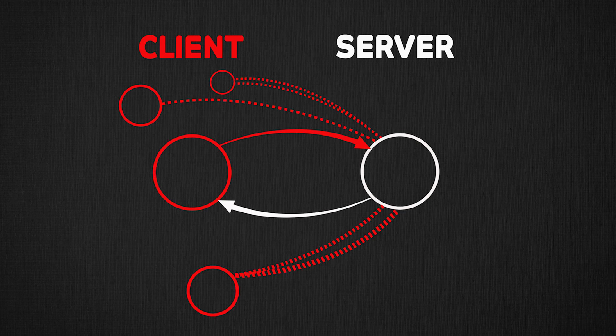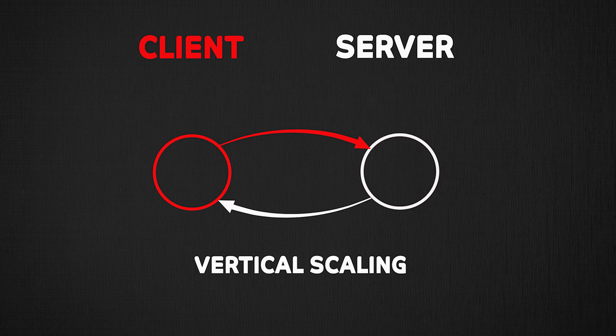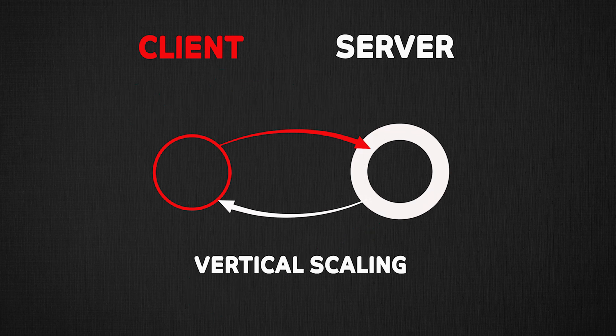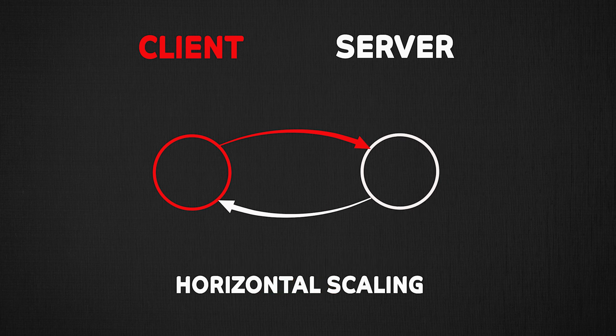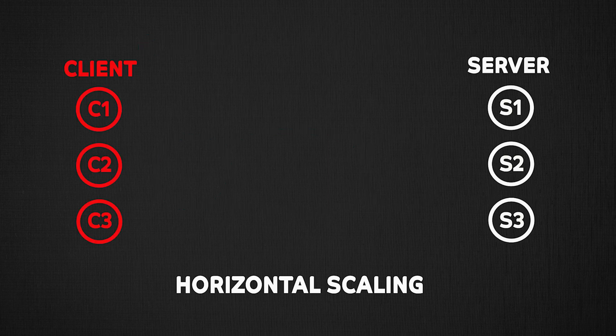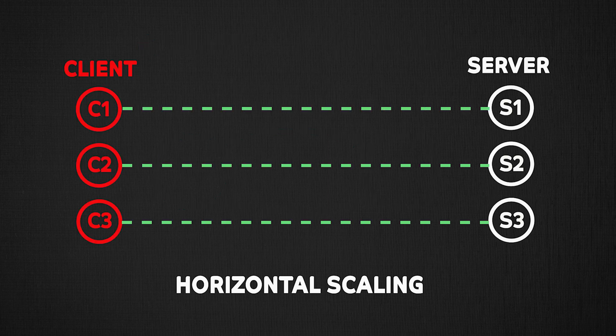To handle this, we typically scale our system, and there are two ways of doing this: vertical scaling and horizontal scaling. Vertical scaling is basically increasing the power of the server, but being a single server, the increase in resources is limited. Which is why horizontal scaling is the popular option, where we add more machines or servers to the system. So now, if we have three servers instead of one, we can handle a lot more requests from our clients. Assuming the servers have similar power, this new setup can now handle three times the load of the previous setup.